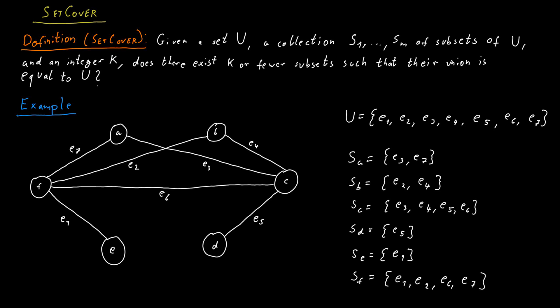This graph has a Vertex Cover of size 2. And our constructed Set Cover instance also has a Set Cover of size 2. As a Set Cover, we can use the set SC and SF. Their union would include all the elements from 1 to 7. And if we select the corresponding vertices in the graph, so the vertex C and the vertex F, that is a Vertex Cover of size 2. So for all edges, at least one of the endpoints is either vertex C or vertex F.